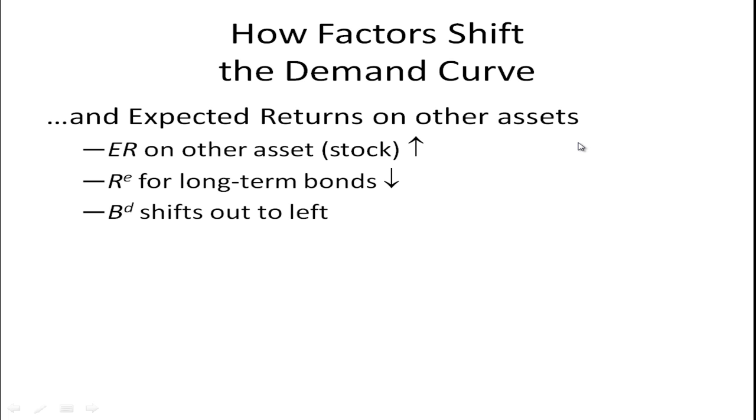Other factors, you can look at other assets. The reason is because other assets are competition for bonds. Stocks, for example. If the expected return on stocks is up, people are going to choose to invest in stocks rather than bonds and the demand for bonds is going to shift to the left. If the expected return for long-term bonds is down, that's also going to shift the demand for bonds to the left. Changes in interest rates affect whether people decide to invest in stocks or bonds.